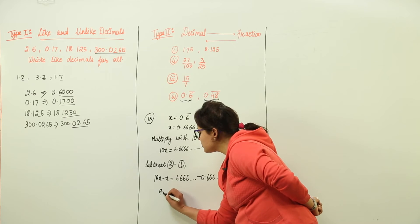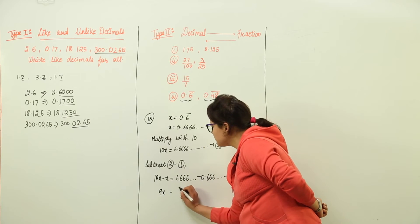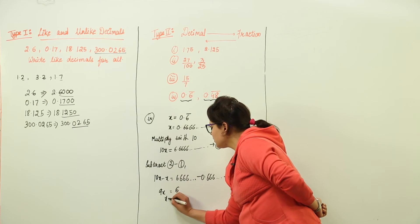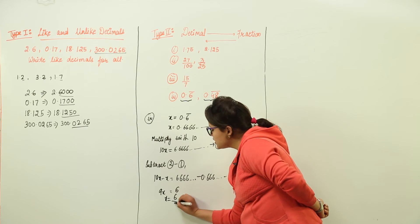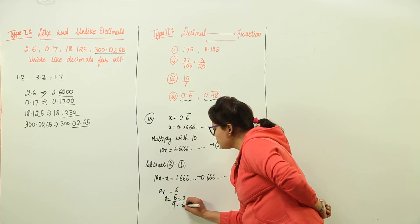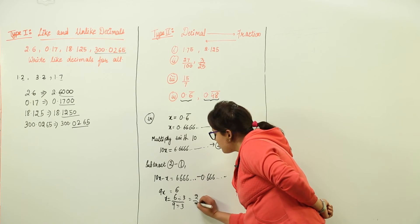And we get 9x on the left hand side. On the right hand side we get 6. So now x is coming out to be 6 upon 9. Solving this further by taking out the factors common, we get 2 upon 3.